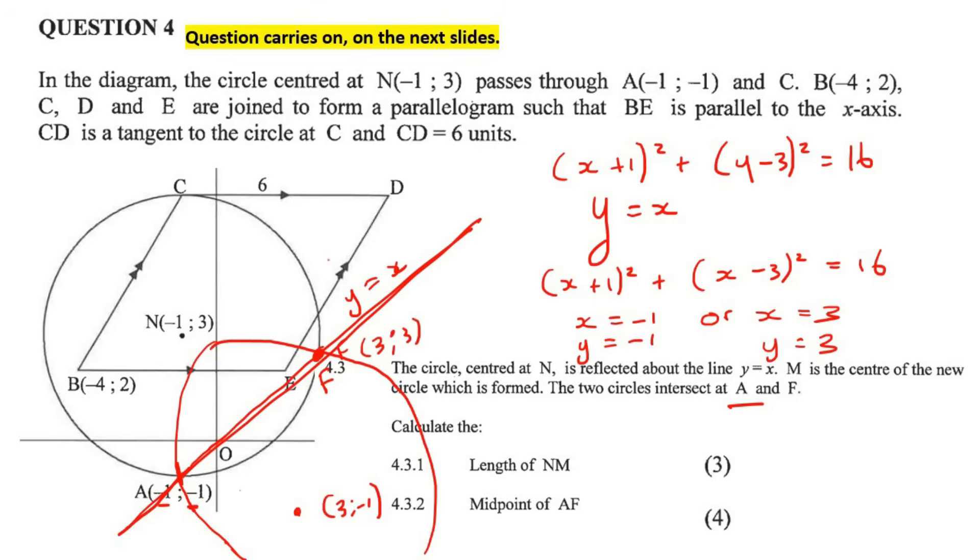So all that we now need to go and do is find the midpoint of a f, because that's what they're asking us for. So the midpoint of a f is just going to be x1 plus x2 over 2, y1 plus y2 over 2. And so that's going to be minus 1 plus 3 over 2, and then minus 1 plus 3 over 2. And if you had to go and work this out, you will end up with 1 and 1 as our final answer over there.